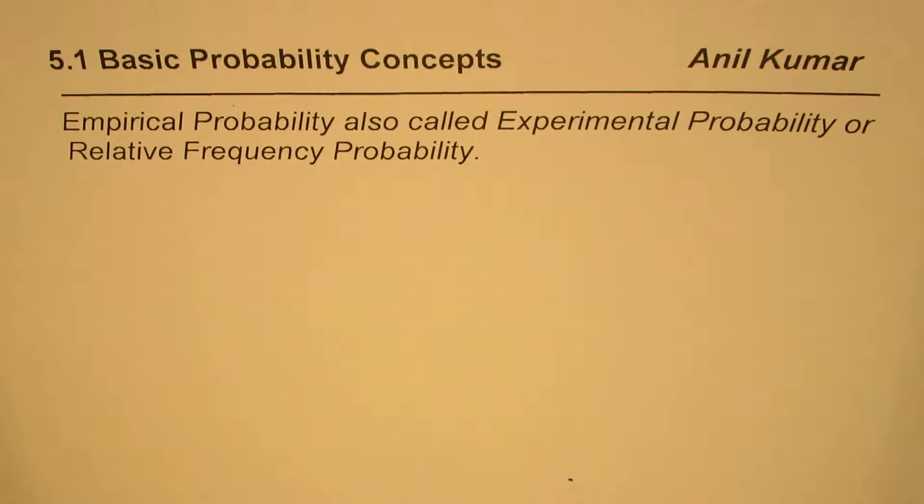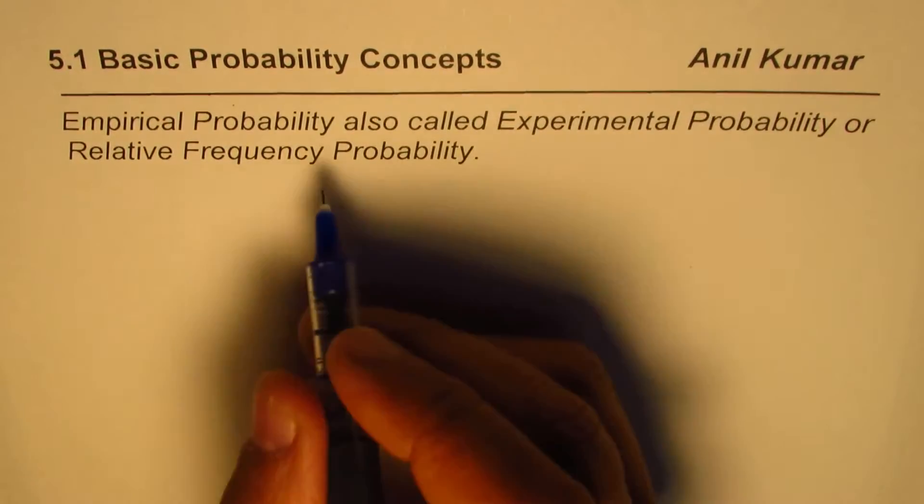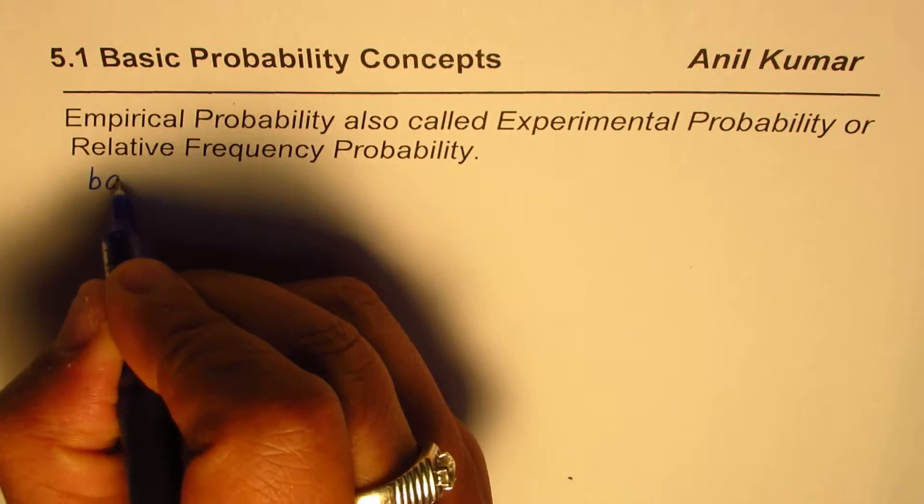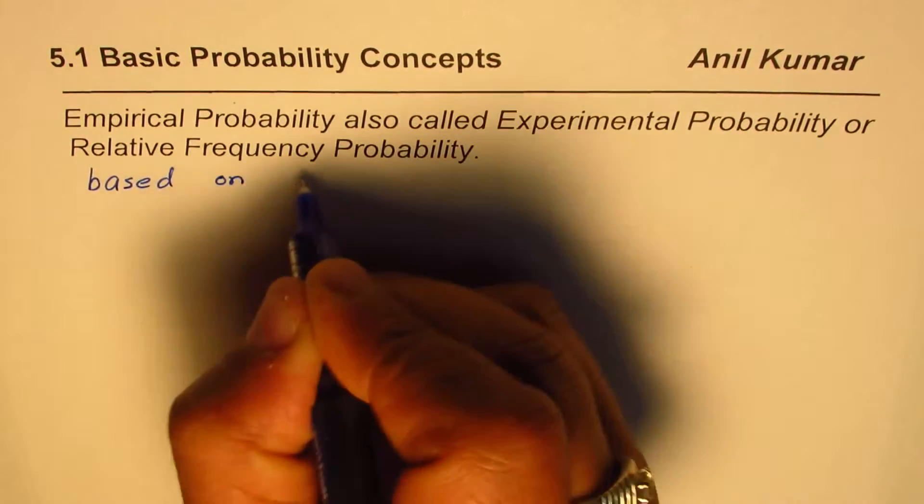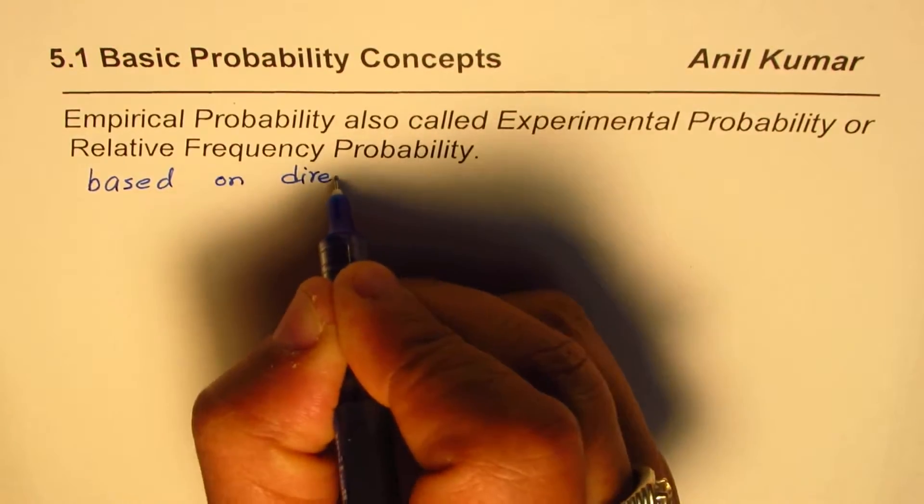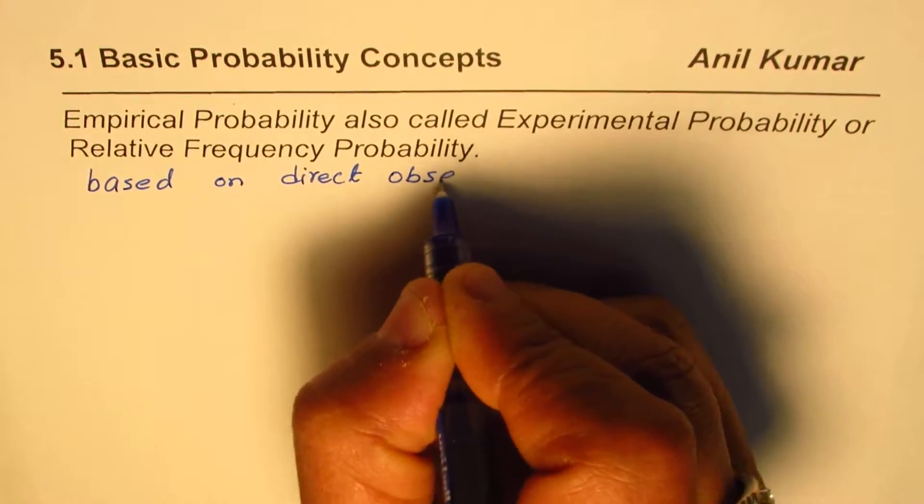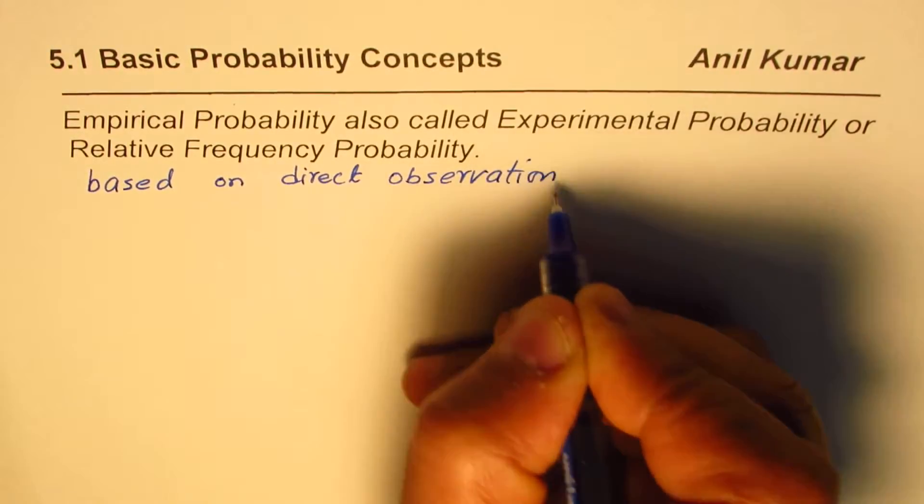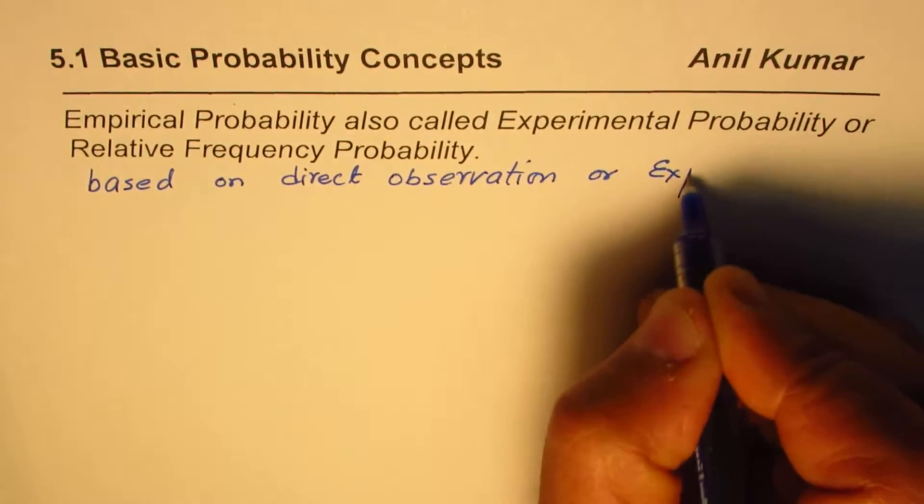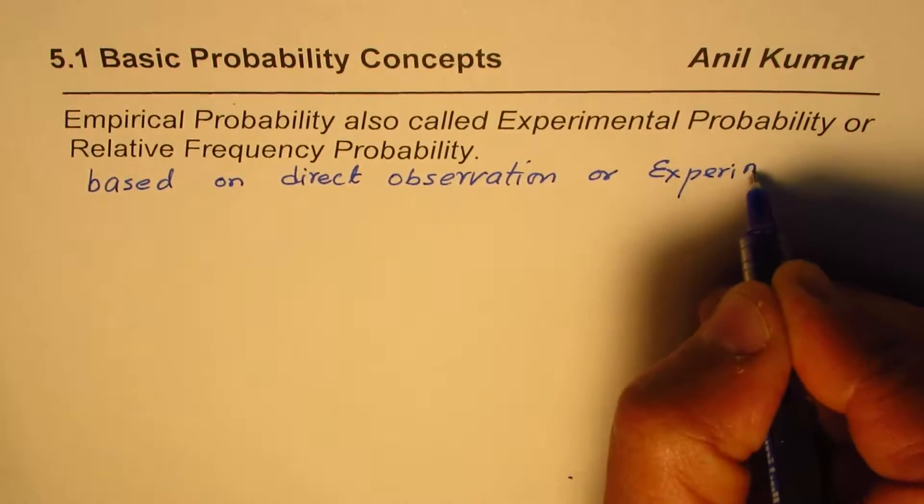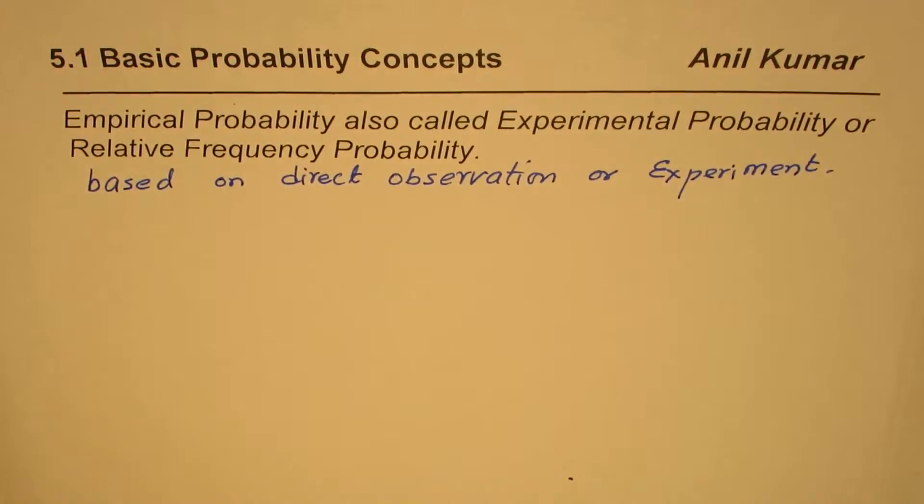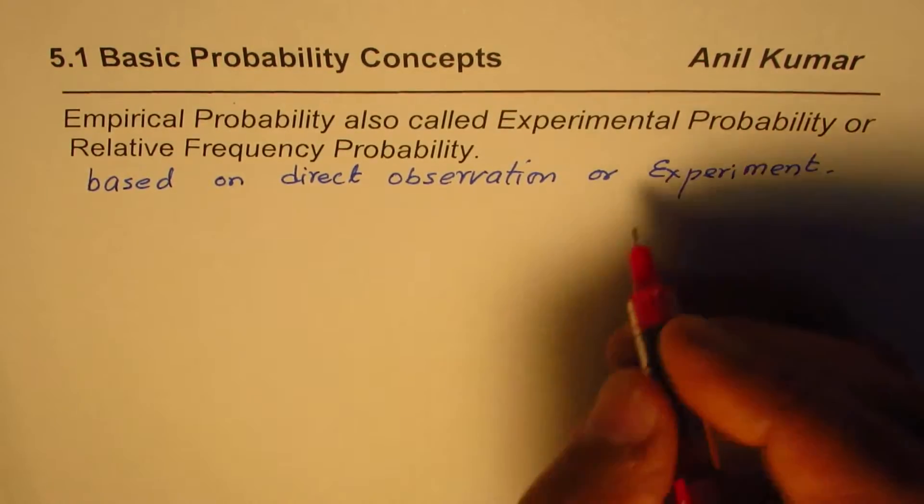Now experimental probability, we also refer to it as empirical probability and relative frequency probability. Whenever you are trying to find practically the probability of an event to happen, then we call it experimental probability. It is based on direct observation or experiment.